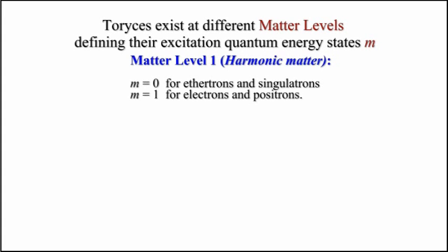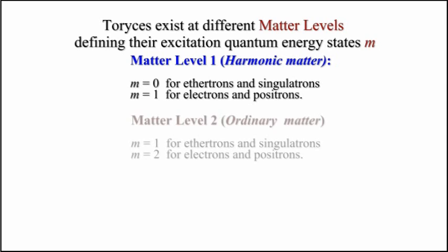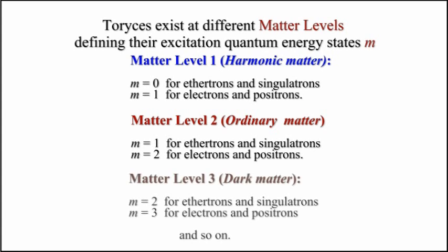For matter level 1, harmonic matter, m is equal to 0 for aetherotrons and singulatrons, and m is equal to 1 for electrons and positrons. For matter level 2, ordinary matter, the respective values of m are 1 and 2. And for matter level 3, dark matter, the respective values of m are 2 and 3, and so on.